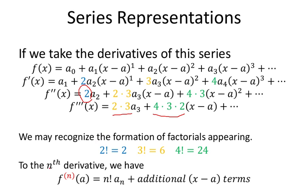If you take N number of derivations, notice in red it's in parentheses. That is a notation because when we're doing primes — we've got 3 primes, 2 primes — when you get more than 3, it gets awkward to write a 4th accent mark. So this is shorthand: a superscripted number in parentheses means N number of derivatives. So if N is equal to 8, this would be the 8th derivative of the function f.